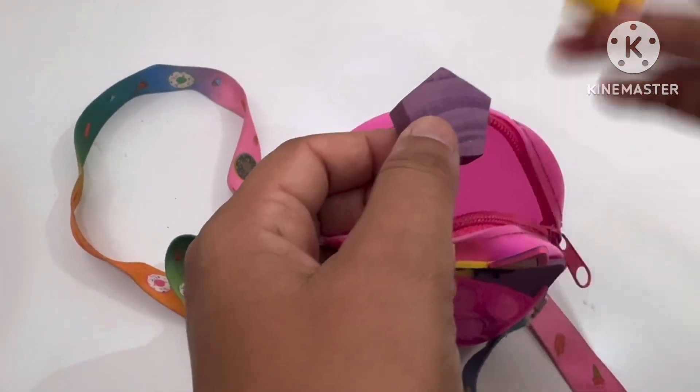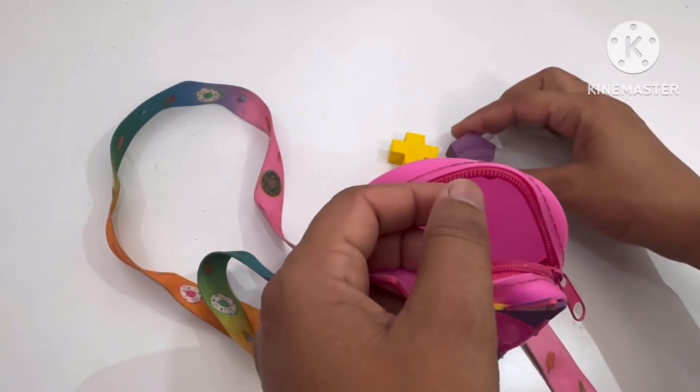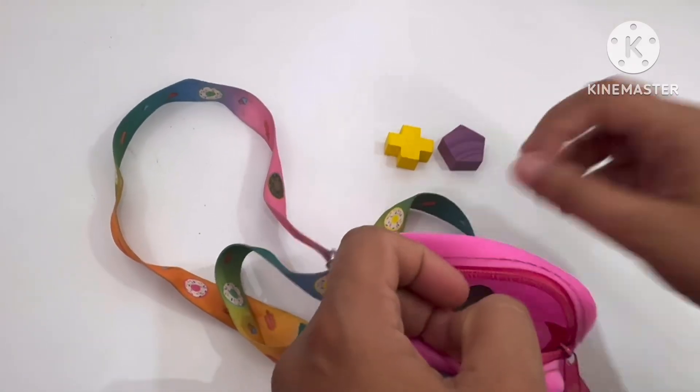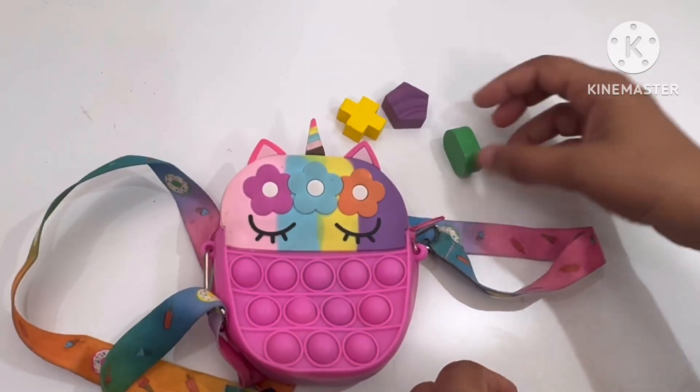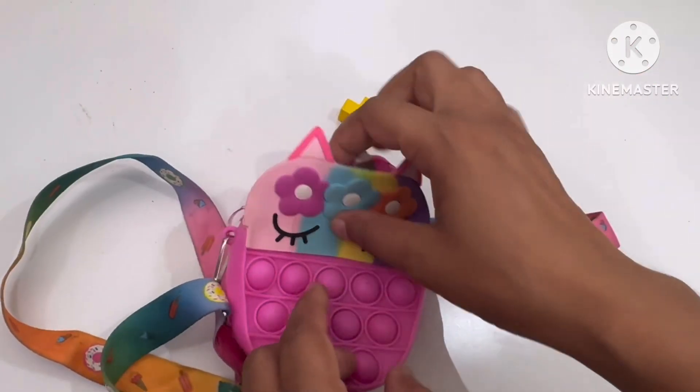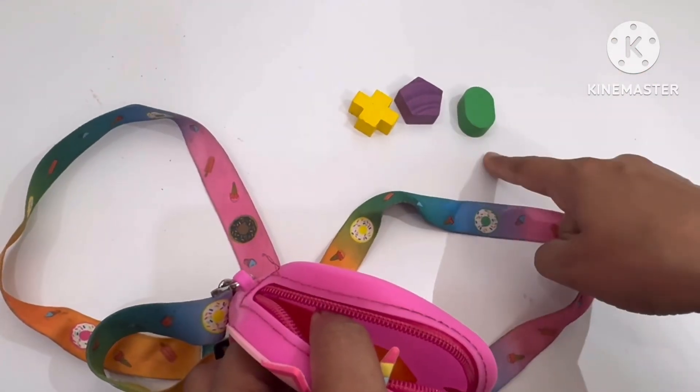Let's see. We have some more in it. What we have? We have cross. We have pentagon. Okay, this is oval shape. It's called cylinder shape as well.